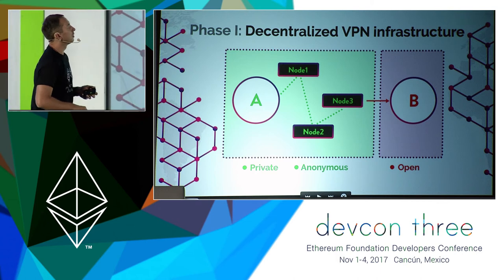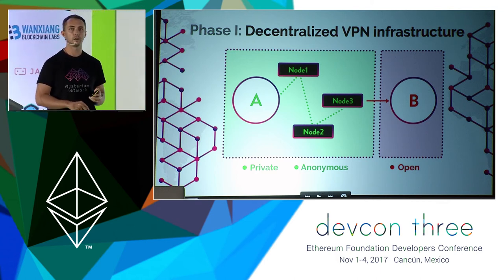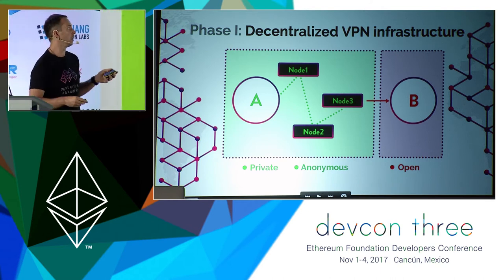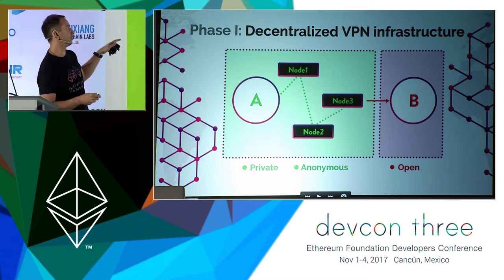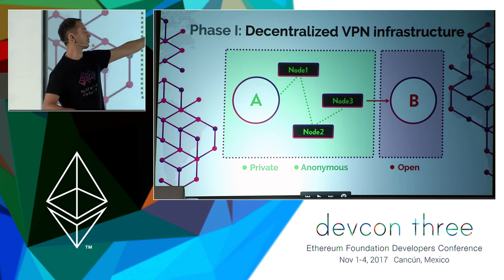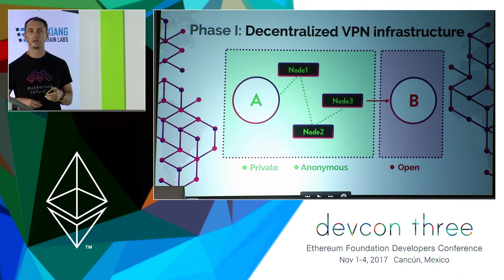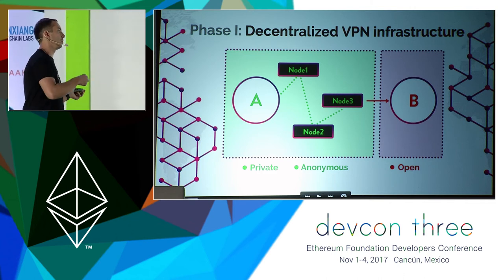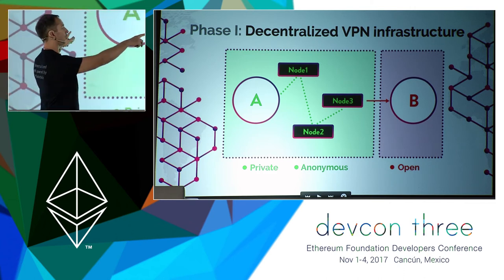On top of that, we're going to add a couple of layers — for example, a decentralized discovery mechanism so there wouldn't be a single point of failure, an anonymous identity management system so the network would know who to pay when entity A is using multiple nodes, and of course an anonymous payment mechanism so that payments could not be tracked.